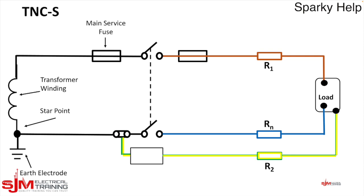We have the main service fuse. We have the main switch. We have the overcurrent protective device which is a fuse and or circuit breaker. We have an exposed conductive part on the appliance or the load or whatever that happens to be. We have our neutral link. We have our MET.